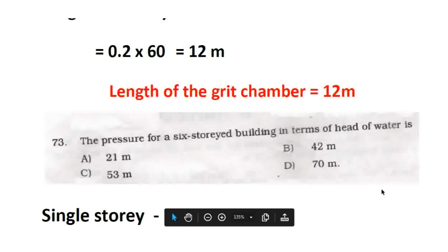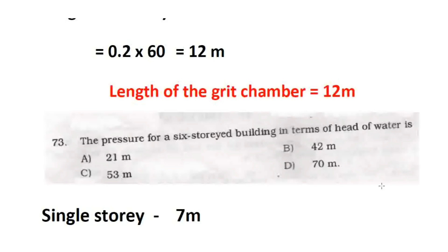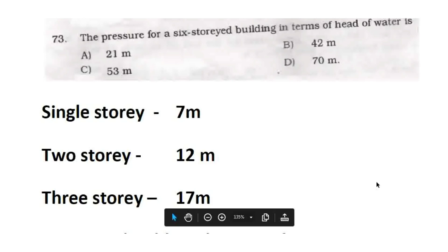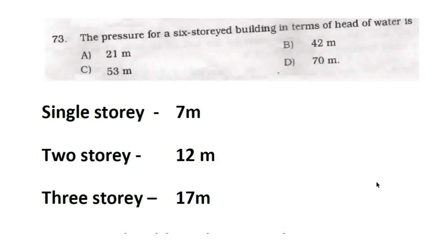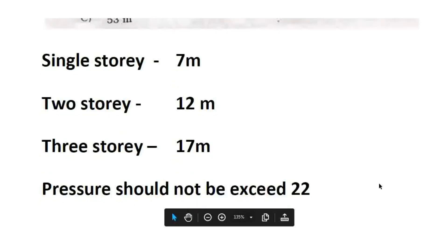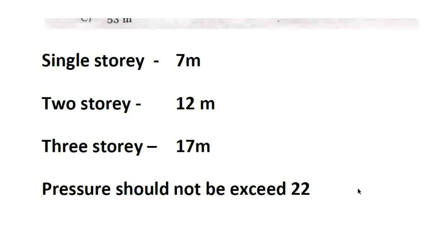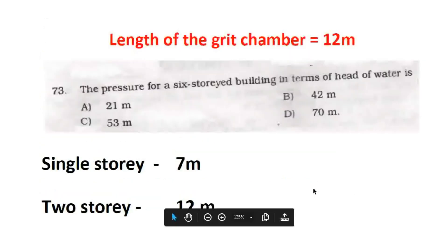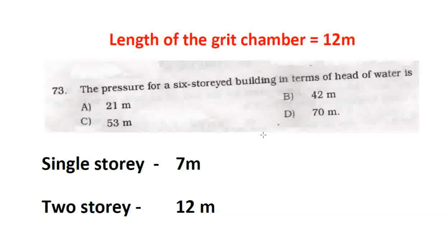The pressure for a 6-story building in terms of head of water: as height increases, more pressure is needed for water supply. For a single-story building, 7 metres; 2-story, 12 metres; 3-story, 17 metres. For a 6-story building, the pressure is 27 metres — actually the answer given is 21 metres, option A.